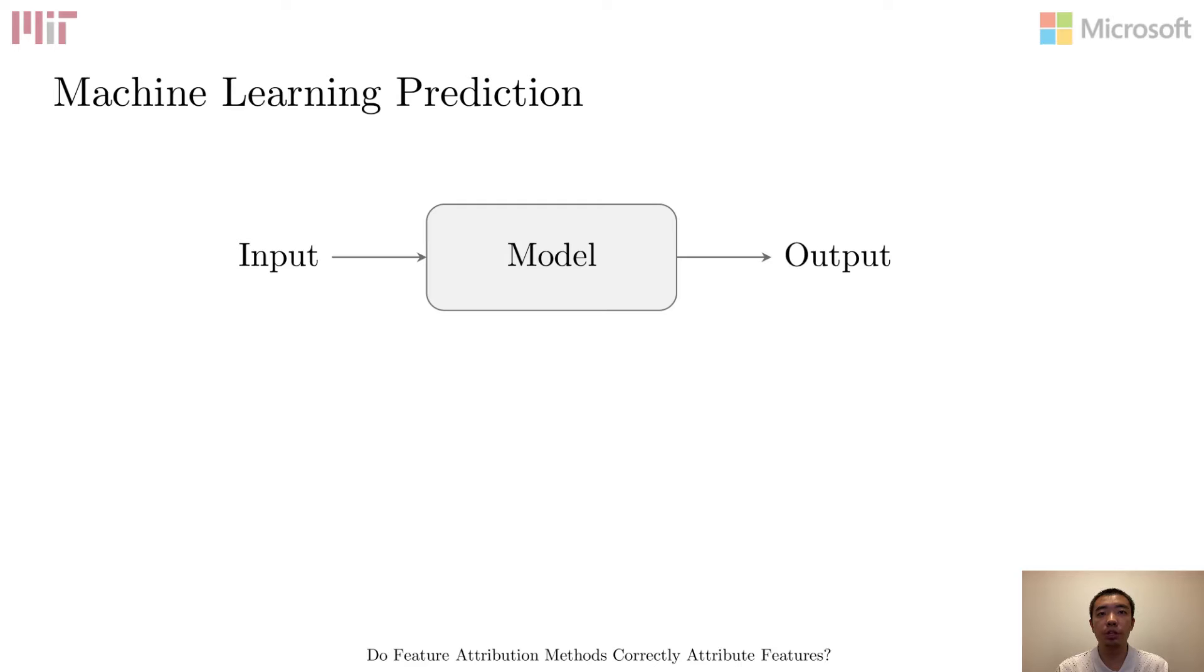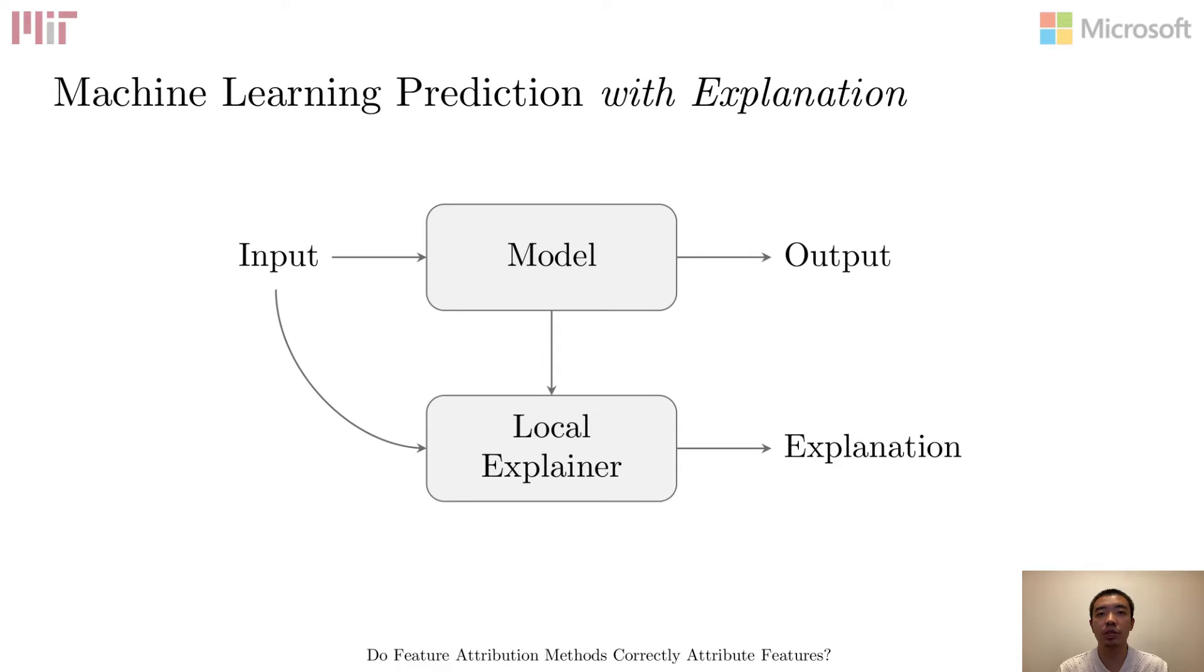Normally, we use machine learning models to predict an output for a given input. However, in many cases, especially high-stakes scenarios, we also want to know why a particular prediction is made. Due to the complexity of modern predictors, such as neural networks, the explanation is often produced by a local explainer.